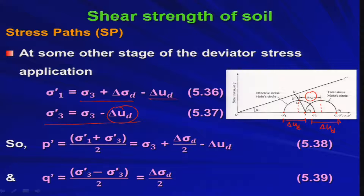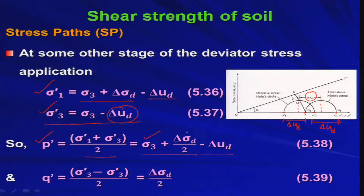Based on these values of sigma_1' and sigma_3', we calculate P' equals (sigma_1' + sigma_3') / 2, which equals sigma_3 plus delta_sigma_d / 2 minus delta_u_d. And Q' equals (sigma_1' - sigma_3') / 2, which equals delta_sigma_d / 2. So we now have P' and Q' at any stage during the test.